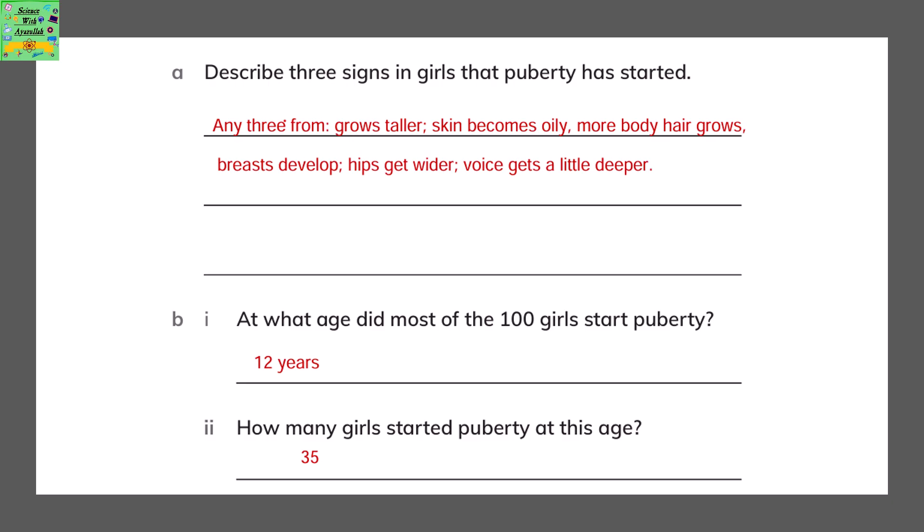Describe three signs in girls that puberty has started. Any three signs are: they grow taller, skin becomes oily, more body hair grows, breasts develop, hips get wider, and their voice gets a little deeper.